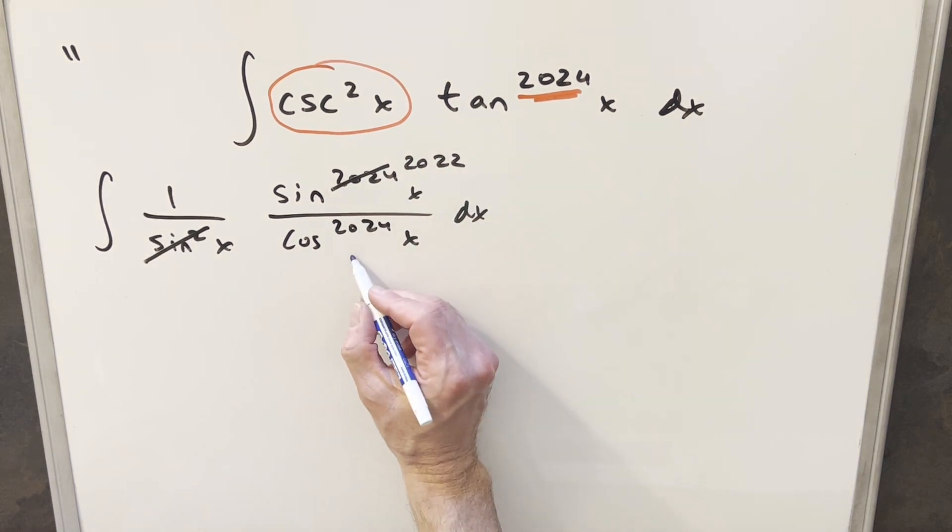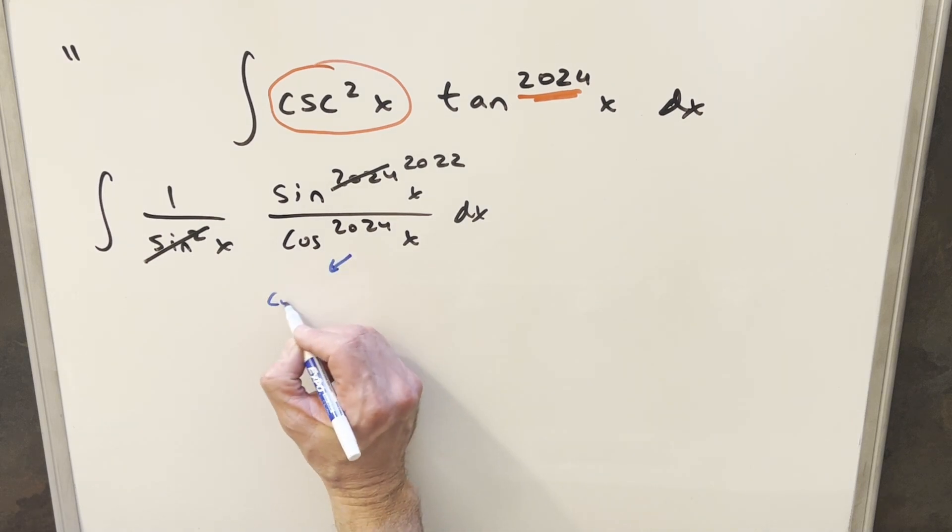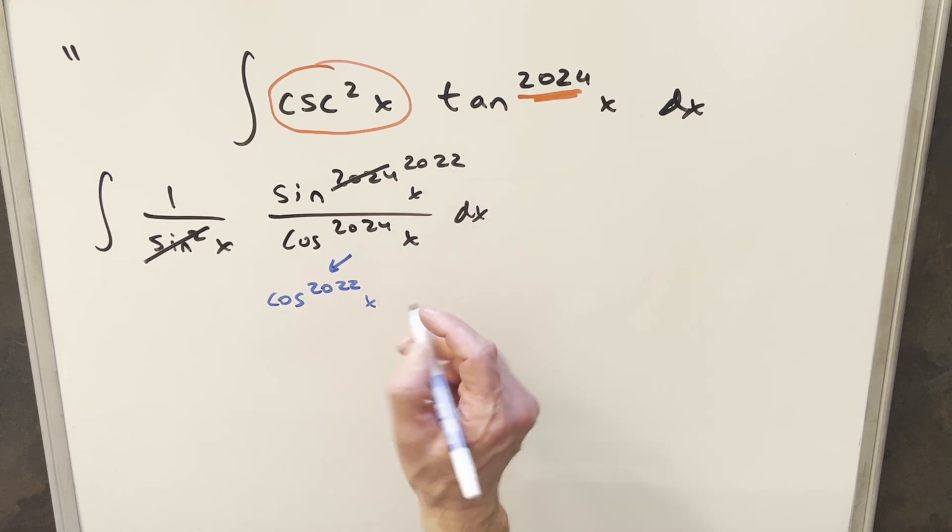But then I can do another rewrite, and what I can do with cosine, I can break this up. I can write this as cosine 2022 x to get it to work with this, and then we'll have cosine squared x.